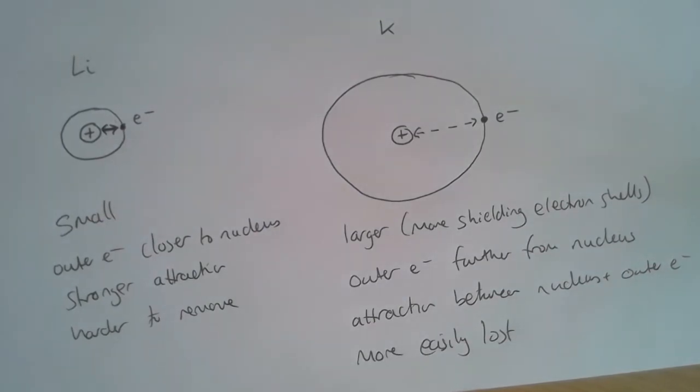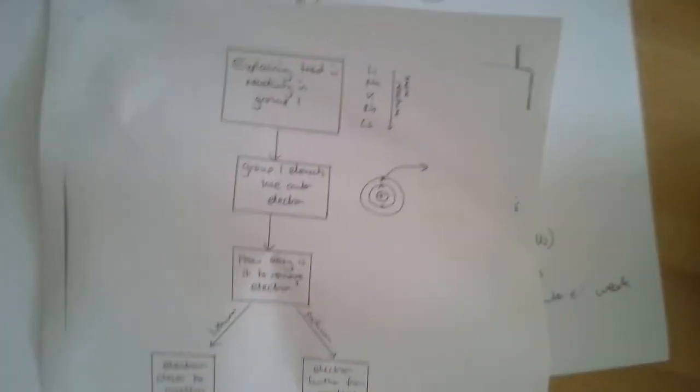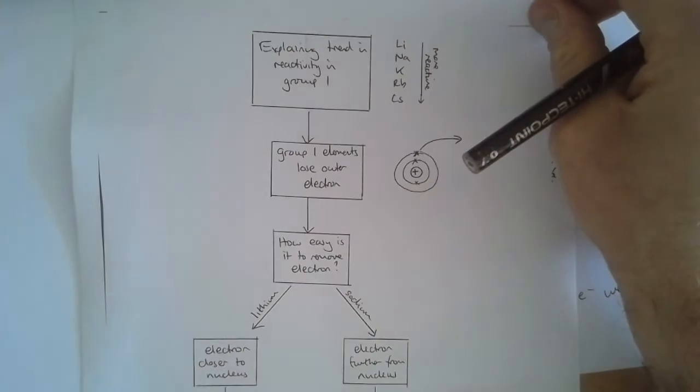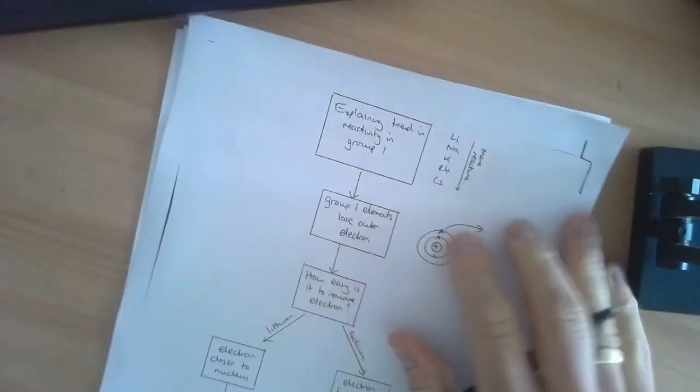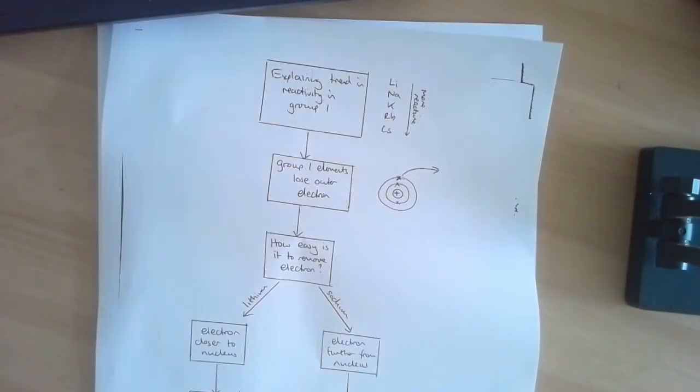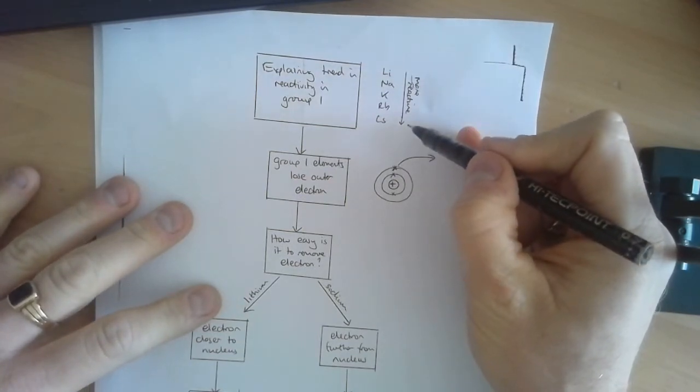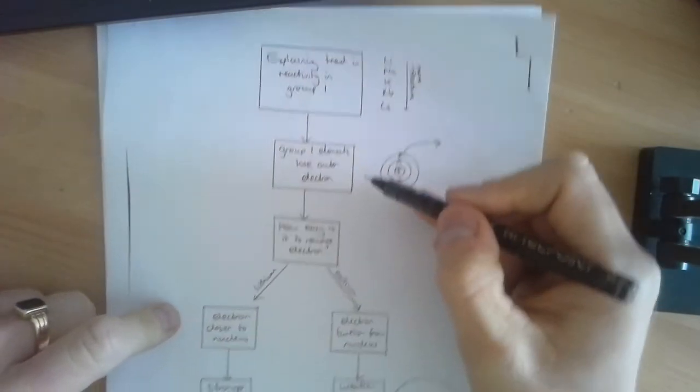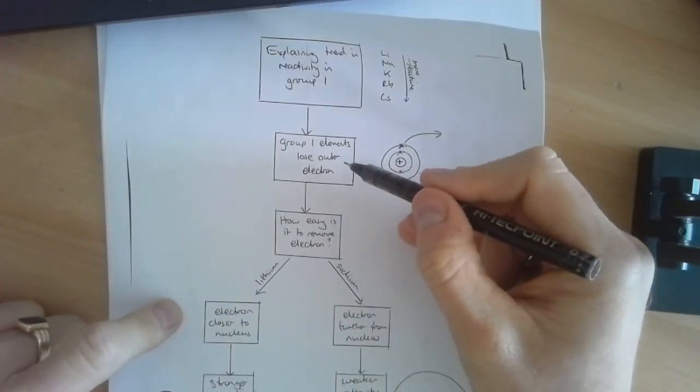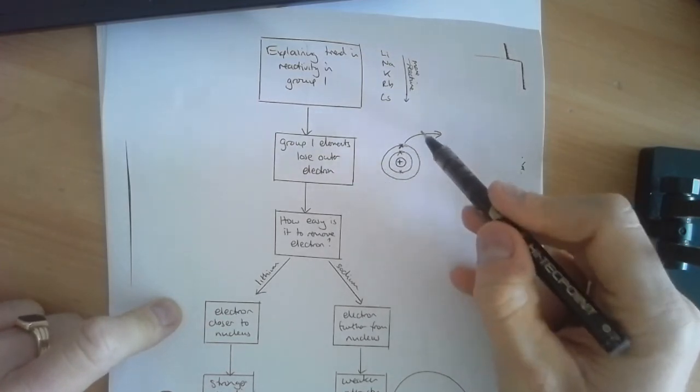I've done a summary flowchart to try and explain all of this. It's also going to be available in the work that I'm going to set for you. So we've summarized the trend in reactivity for group 1 elements. We know that they need to lose one electron when they react.